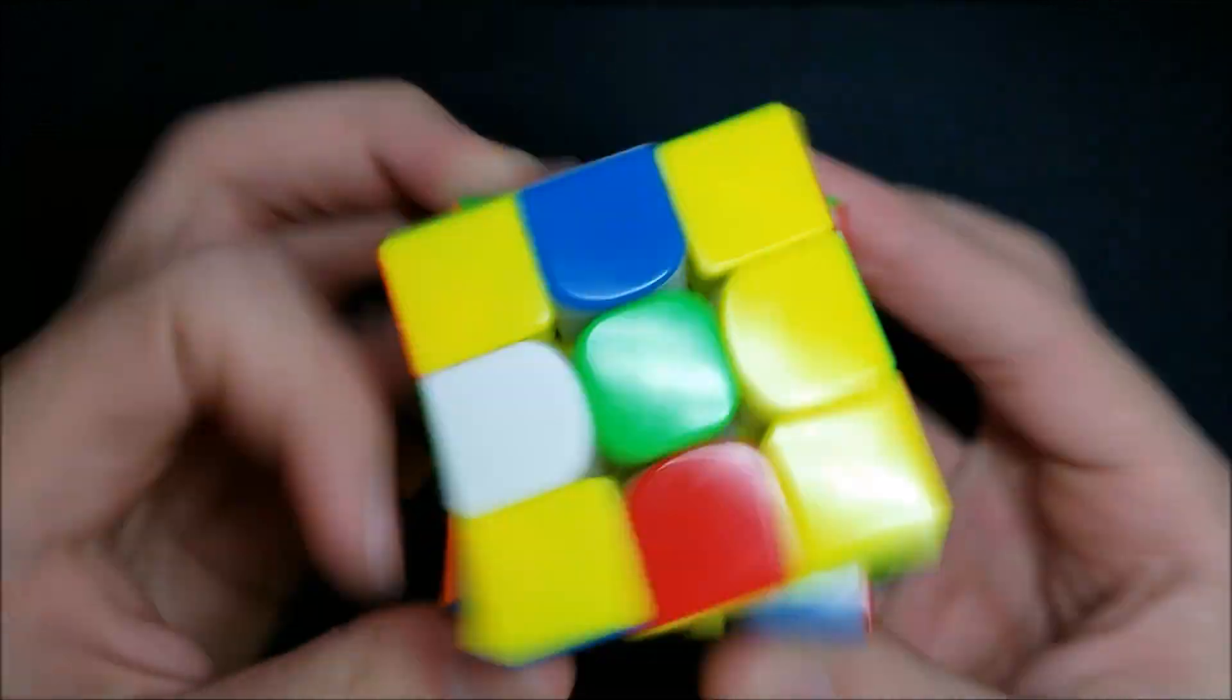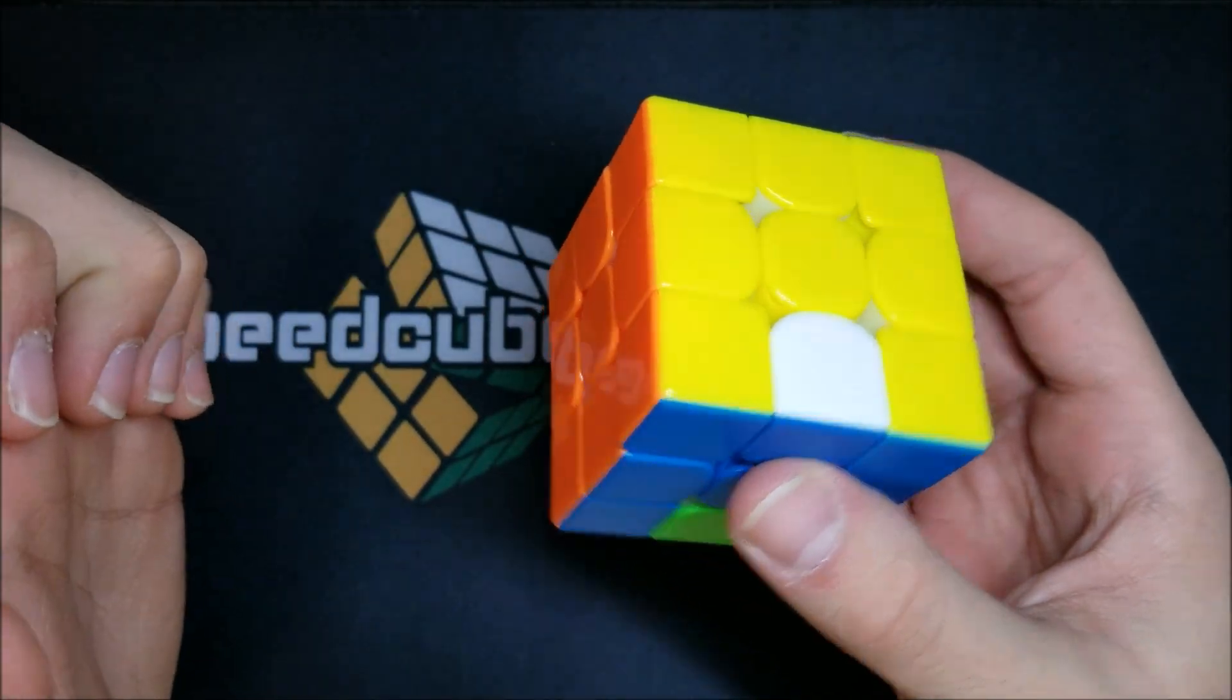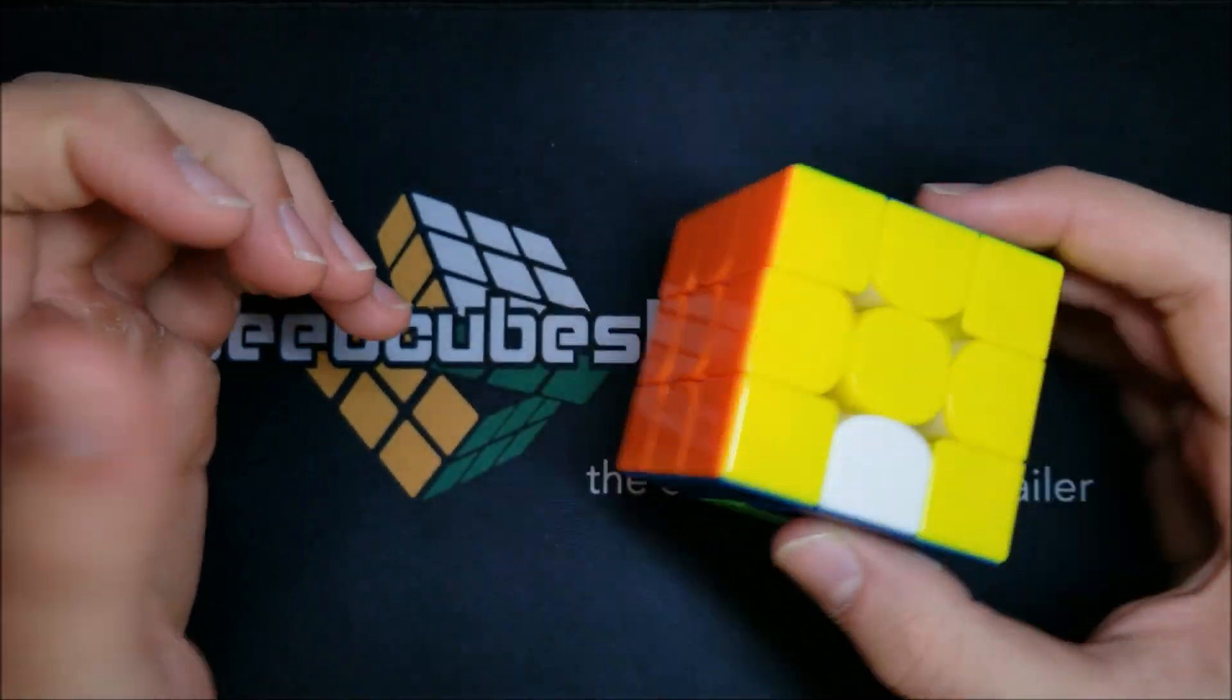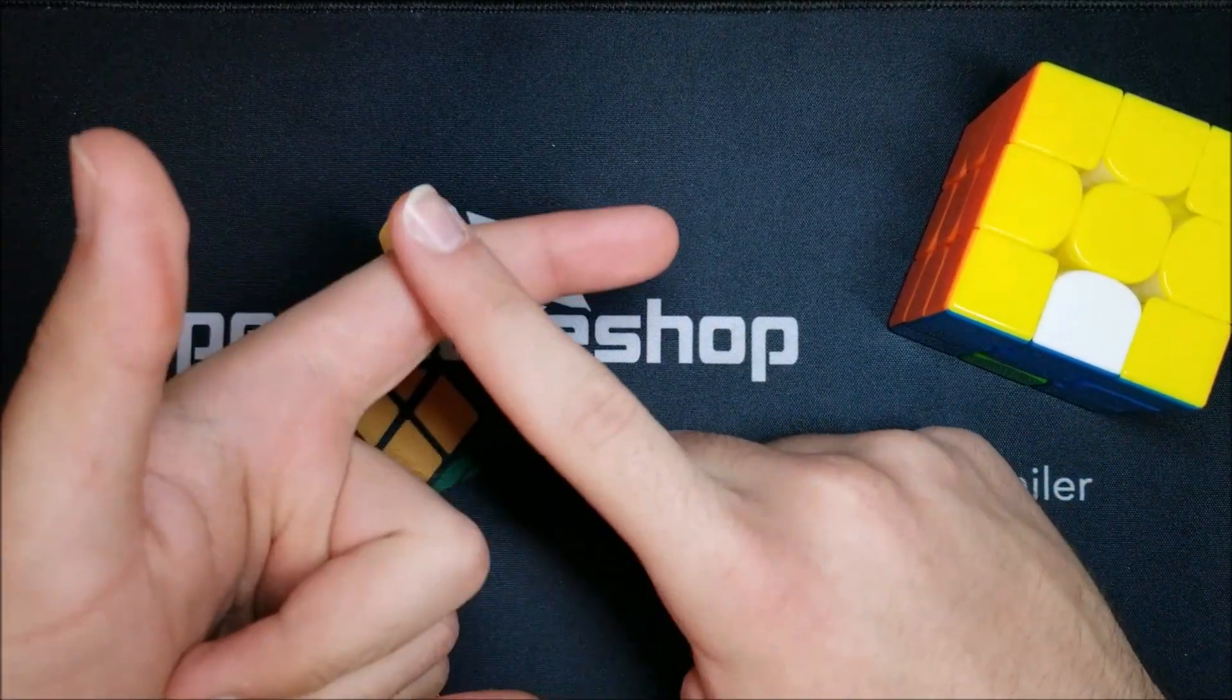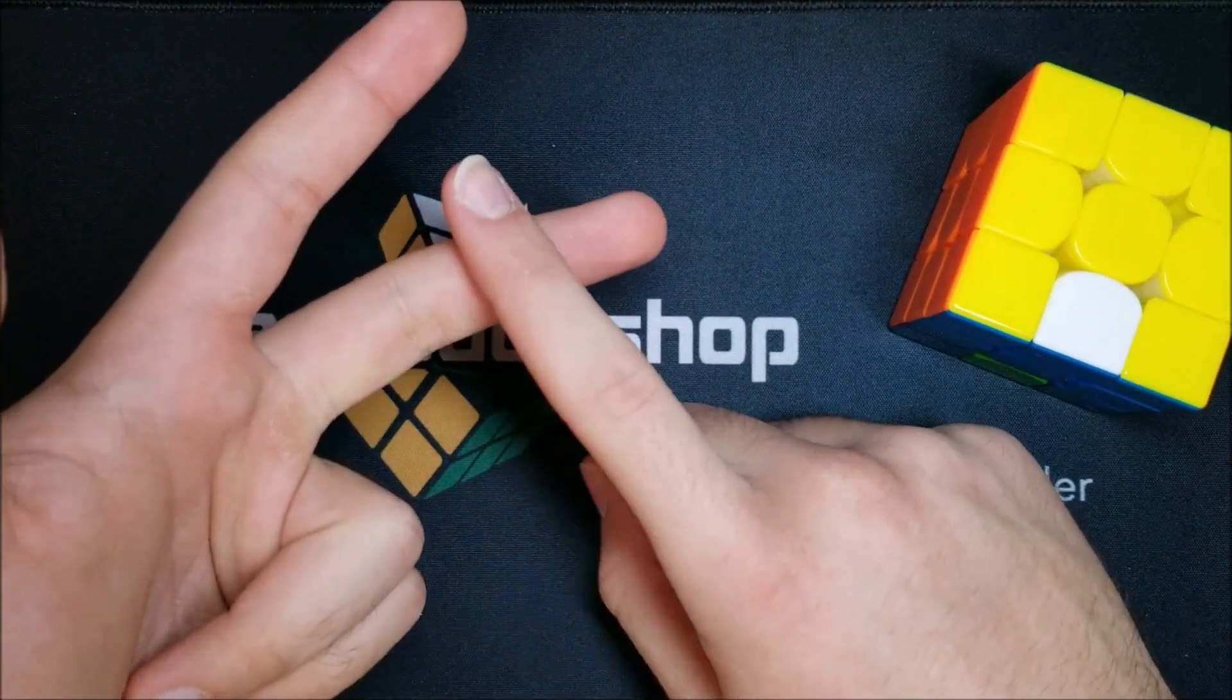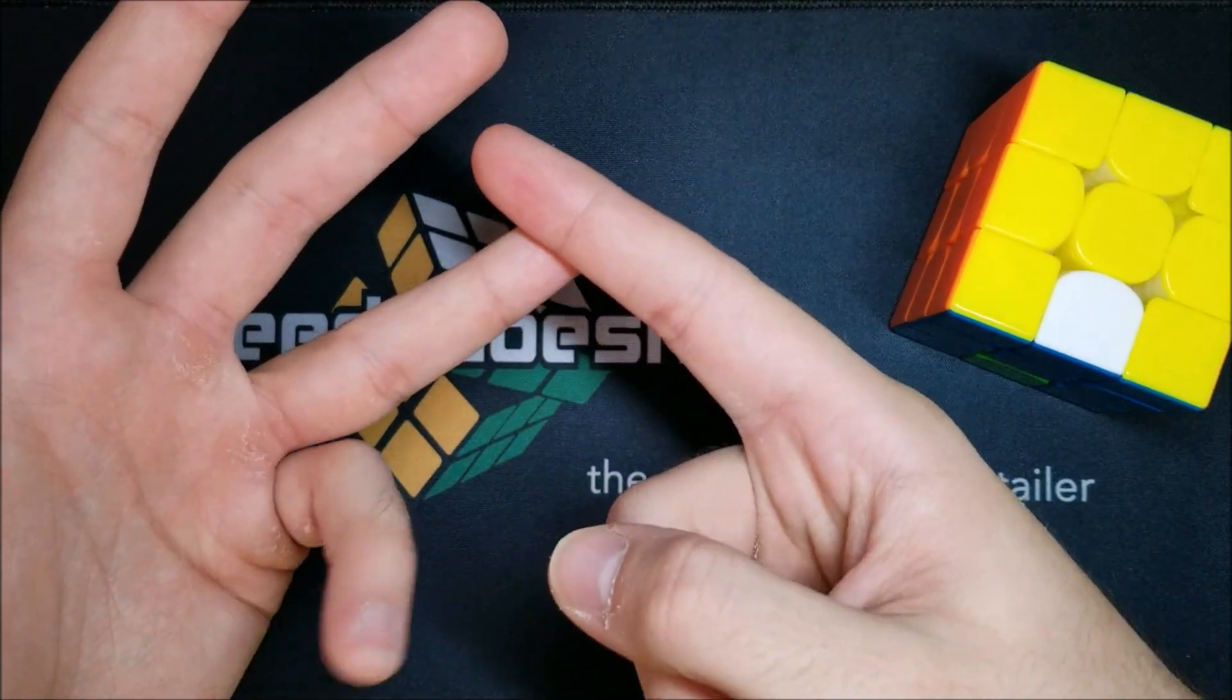That's basically it for the types of drills you can do. So it goes, you can do first block, you could do first block plus DR, you can do first block plus second block square, you can do first block plus second block, so whole first two blocks.